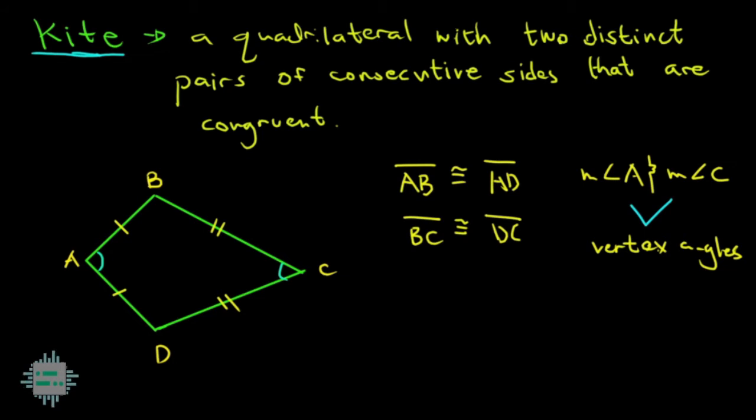Yun ay yung angle na nabuo nung sides na magkasukat. Ang vertex angles lamang ay itong si angle A, dahil itong AB and AD na kanyang sides ay congruent. And then si angle C din ay vertex angle because ang kanyang sides ay si CD and BC na parehas ng sukat. Kagaya ng iba pang uri ng quadrilaterals, meron ding special properties itong kites. Mahalagang alam natin para makapag-solve tayo ng problems.